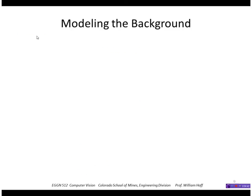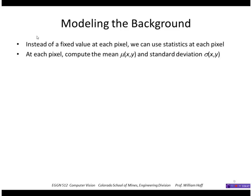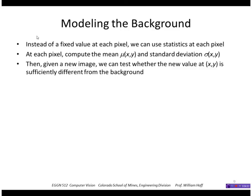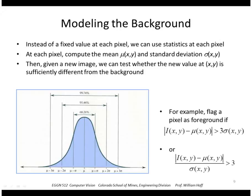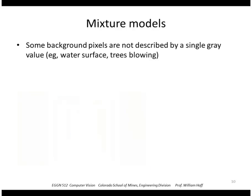A more sophisticated way to model the background is to use statistics at each pixel — namely the mean and standard deviation. Given a new image, we test whether the new pixel value is sufficiently different from the background. Provided that the values at a pixel follow a Gaussian distribution, we could threshold at a three-sigma value to flag potential foreground points.